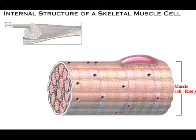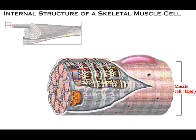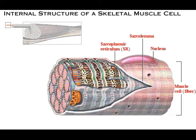Skeletal muscle cells are elongated and are often referred to as muscle fibers. Let's look at the internal structure of these unique cells. The nucleus is the cellular structure that contains the genetic material. The sarcolemma is the specific name for the plasma membrane of the muscle cell. The sarcoplasmic reticulum, or SR, is the name for the endoplasmic reticulum of the muscle cell. Its interconnecting tubules surround each myofibril like the sleeve of a loosely knit sweater. Terminal cisternae are sac-like regions of the sarcoplasmic reticulum that serve as specialized reservoirs of calcium ions.